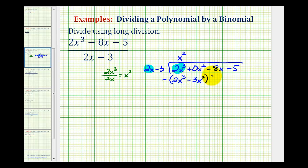So instead of subtracting, we'll have plus negative 2x cubed plus 3x squared. Here we have 2x cubed plus negative 2x cubed, that'll be zero. And then we have 0x squared plus 3x squared, that'll be positive 3x squared.